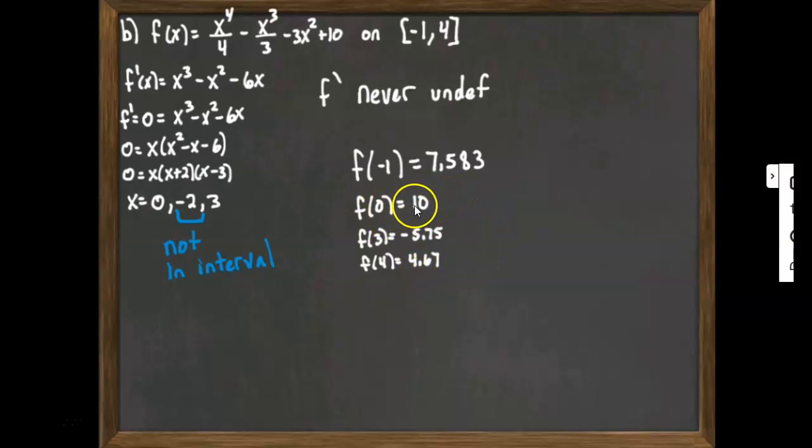So in this case, we see that f(0) = 10 is the biggest the function ever gets. f(3) = -5.75, that is the smallest that my function ever gets amongst these values. And so therefore, maximum at 10 and a minimum at -5.75. So those are our absolute max and min on this interval.